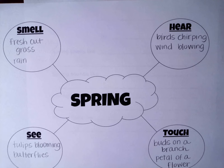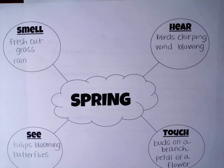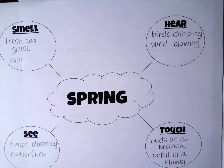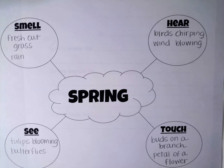Hi friends, this is the writing lesson for second grade. We are going to work on our spring senses poem. Yesterday we did some brainstorming using four of our five senses: our smell, what we can see, what we can hear, and what we can touch in the spring. So we are going to take that information and turn it into a nice little springtime poem.